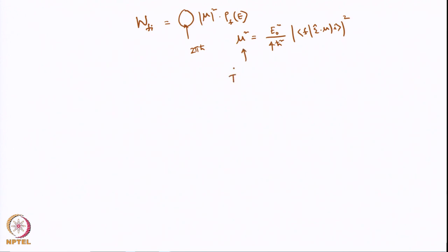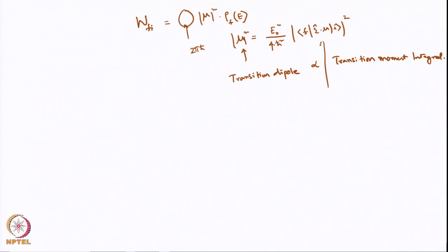The modulus of this is the transition dipole, and this transition dipole is proportional to the transition moment integral. Now, one thing you must remember is that this transition moment integral dictates what the selection rules are going to be. We have not come across selection rules yet in this course, but the last few lectures will be based on the selection rules of rotation, vibration, and electronic transitions.